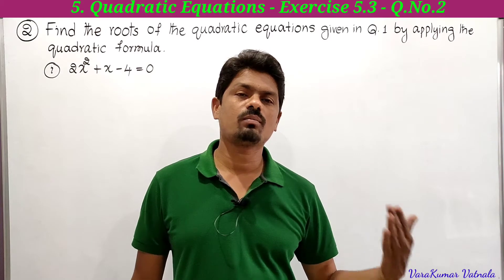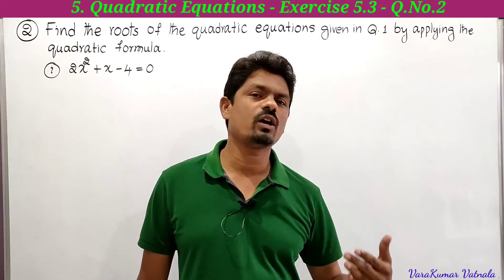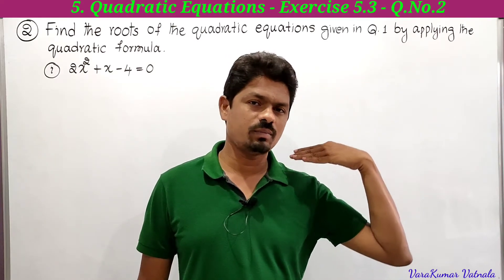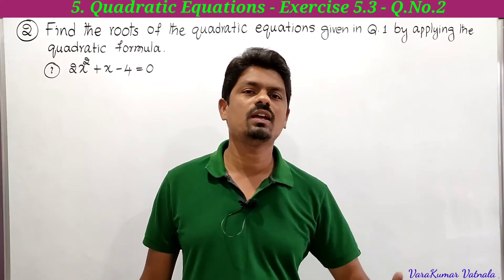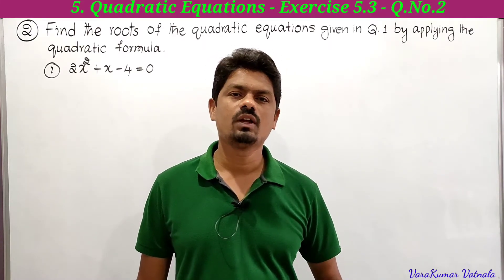The quadratic formula is: x equals minus b plus or minus square root of b squared minus 4ac, divided by 2a.